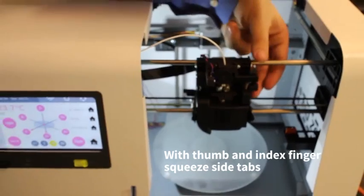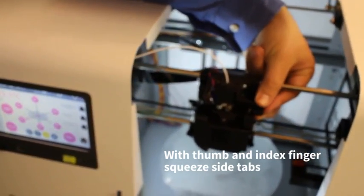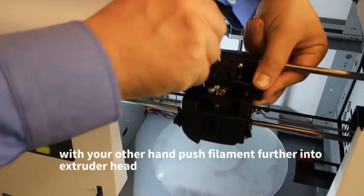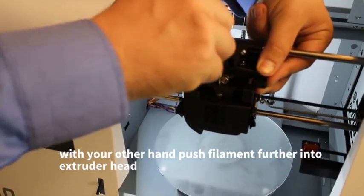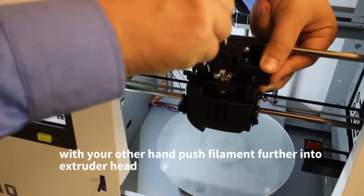With one hand, you press this button on the side. And with the other hand, you push the filament inside the extruder until you can no further push it down.